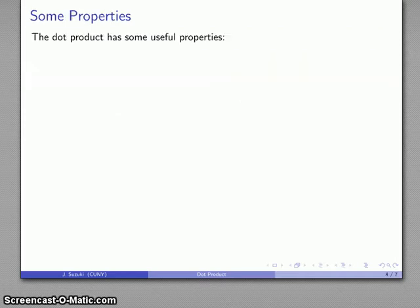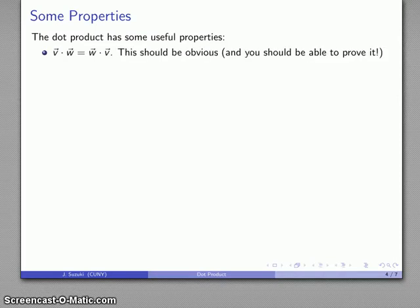Now, why would you want to do this? Well, there's some useful properties of the dot product that make it very important. One of the useful properties is that it's commutative. V dot W is the same thing as W dot V, and this emerges directly from the definition of the dot product. It's something you should be able to prove without any difficulty.